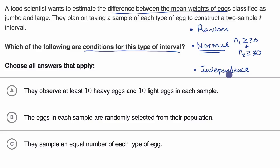So with that little bit of a review, let's see which of these apply. They observe at least 10 heavy eggs and 10 light eggs in each sample. So this actually is the normal condition when we are dealing with proportions, not for means. So I would rule this out, it's a good distractor choice.